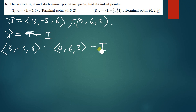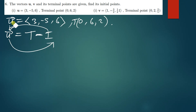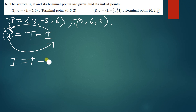The initial has not yet been given, so what we do is make the initial the subject of the formula. Taking the initial to one side makes it positive, and the vector comes to the other side as negative. So to find the initial, we say: initial = terminal minus the vector.